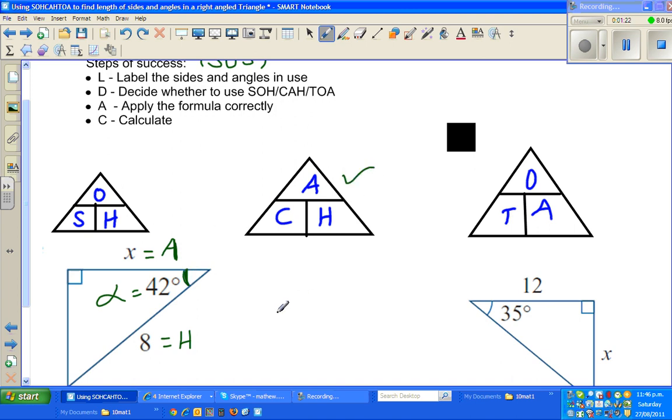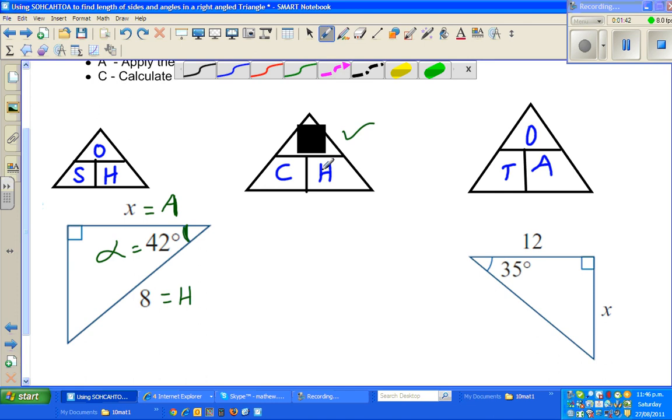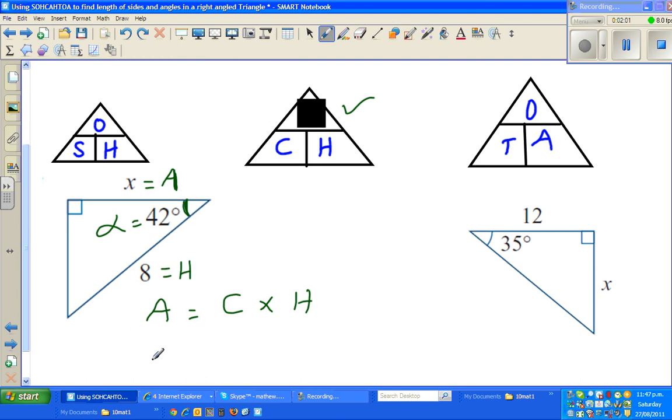So I have to decide this formula, that is CAR. And the next is apply the formula. To apply the formula, it's always good to cover up what you want to find. So I want to cover up A because I want to find A. You can see C and H sitting nearby together. So they are close friends. They would like to be multiplied. So I can say A is equal to C times H.